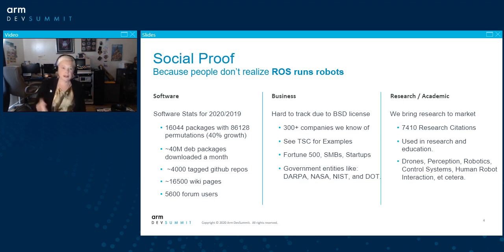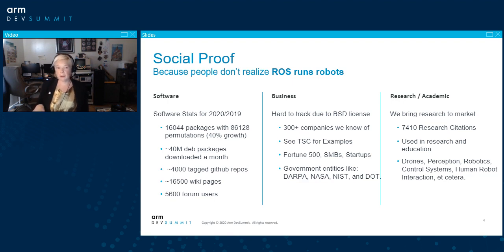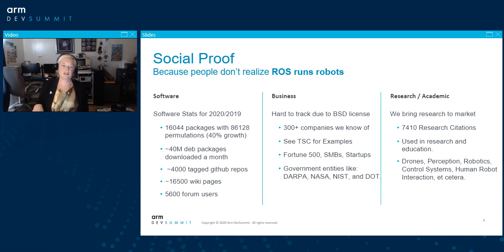If you want to talk about the business side of things, it's hard to track because we have a BSD license. But there are 300-plus companies I know of that are running ROS. You can look at the ROS2 Technical Steering Committee for examples. It's everything from Fortune 50 companies to small businesses, startups, academic institutions, government entities — DARPA, NASA, NIST, the Department of Transportation in the US — and there's equivalent work in the EU and Asia.